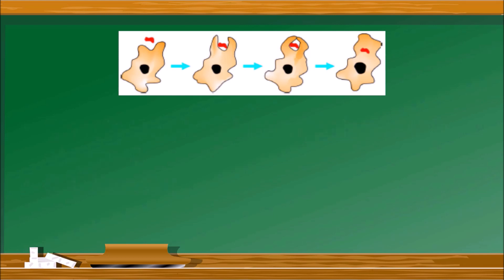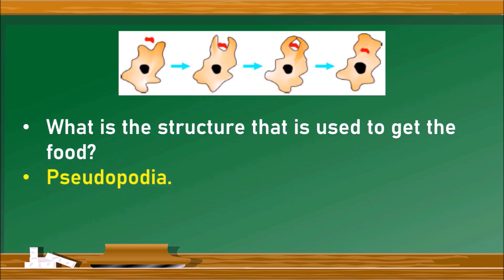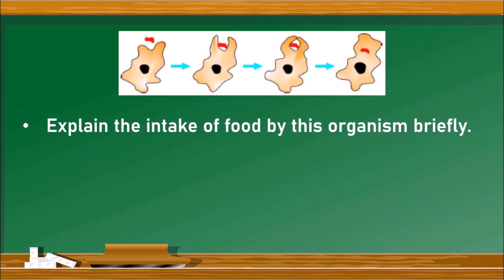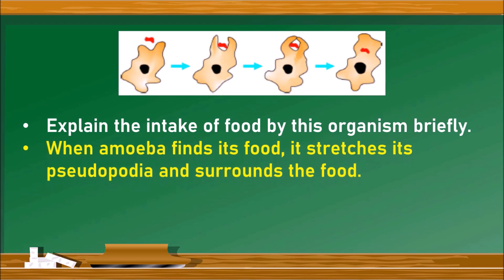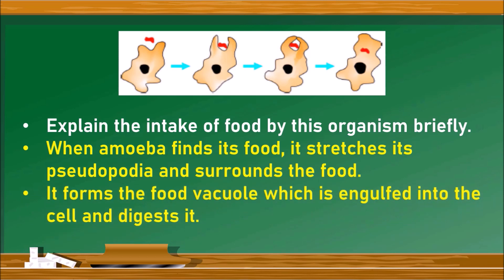What is the structure used to get food? The answer is pseudopodia — amoeba extends its pseudopodia surrounding the food. To explain the intake of food briefly: when amoeba finds its food, it stretches its pseudopodia and surrounds the food, then forms a food vacuole which is engulfed into the cell and digested.